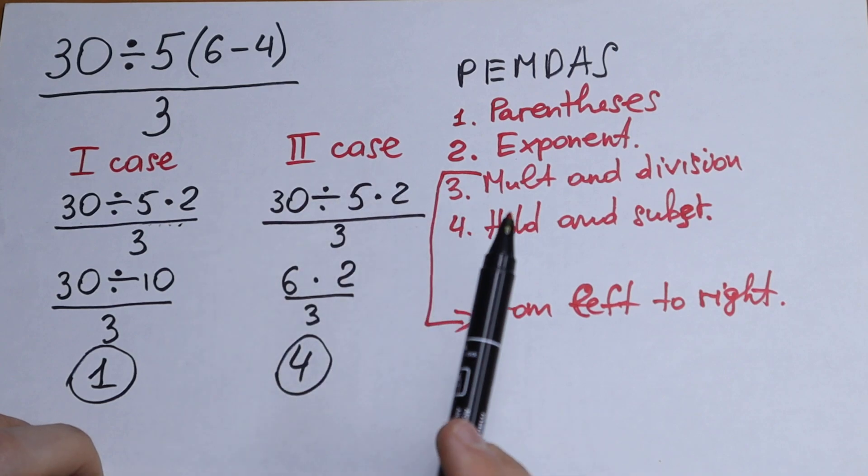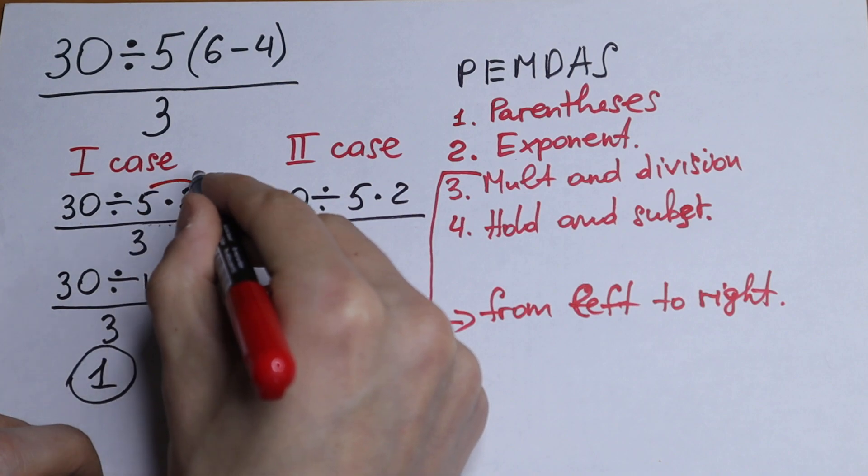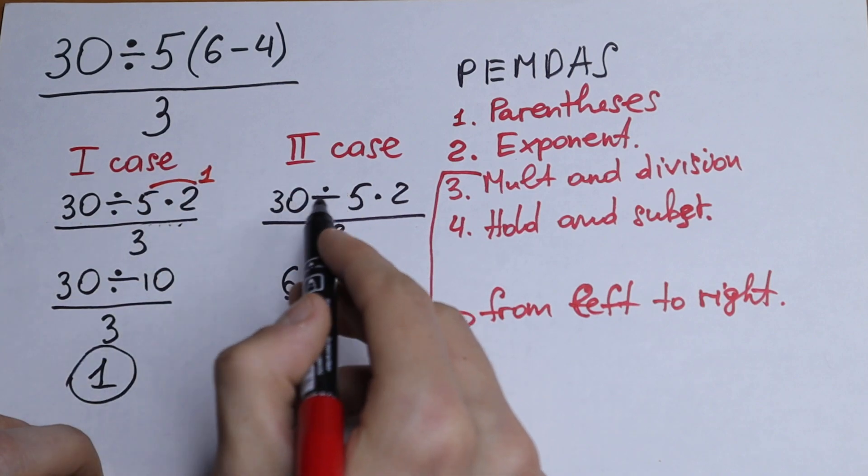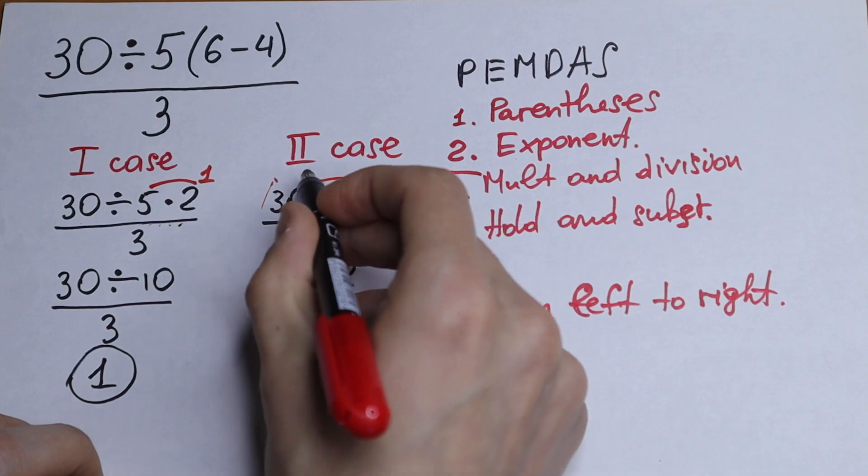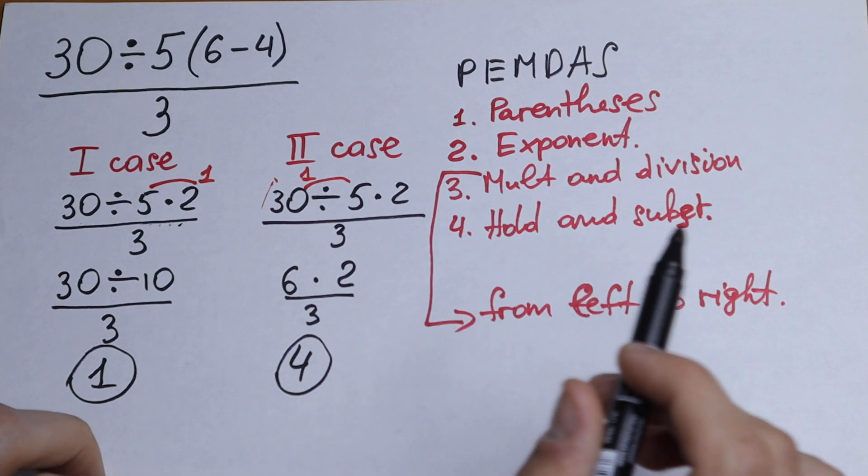Division, then multiplication. Right here, we multiply at first. This will be our first step. But right here, division will be our first step, which is correct, using PEMDAS order.